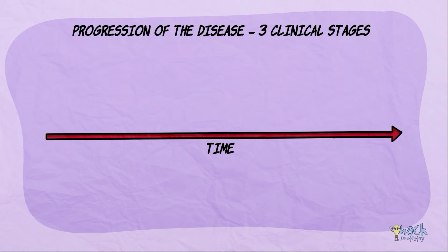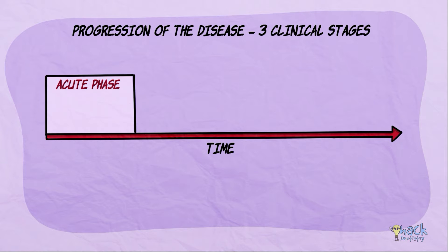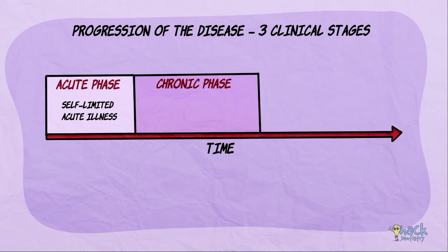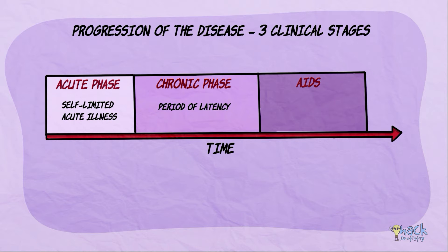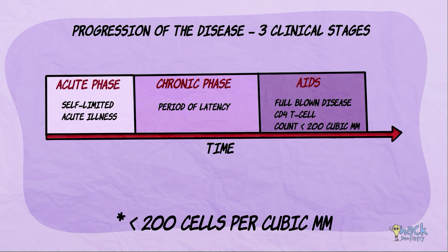There are three clinical stages in the progression of this disease. The first stage is the acute phase, a self-limited acute illness. The next stage is the chronic phase, which is a period of latency. The last stage is AIDS, where the patient suffers from full-blown disease and CD4 T-cell count is less than 200 cells per cubic millimeter.